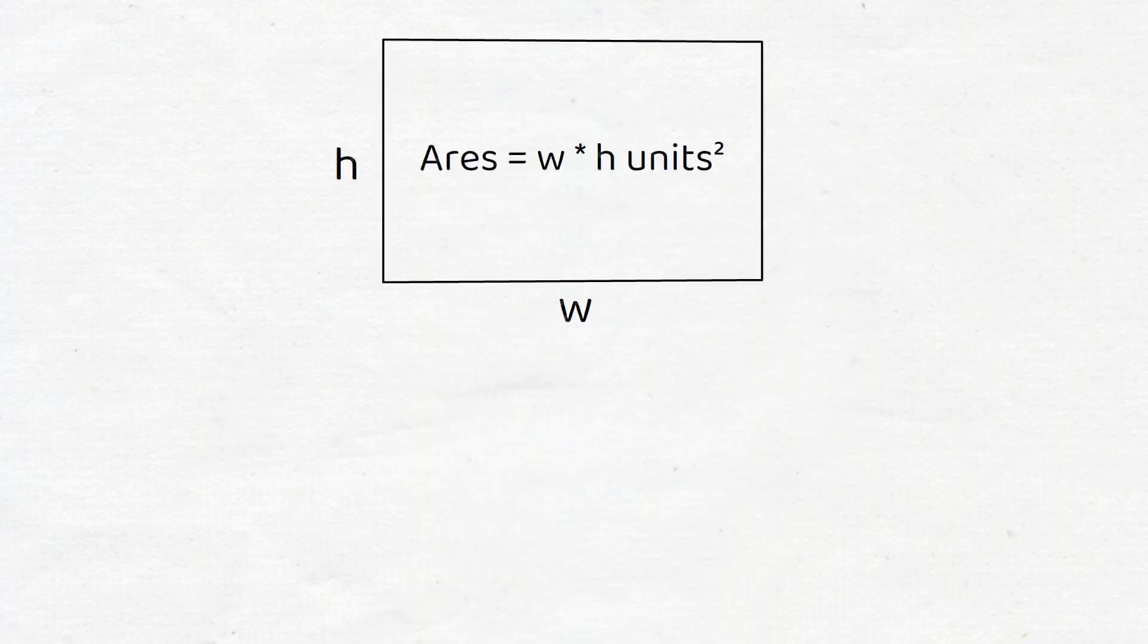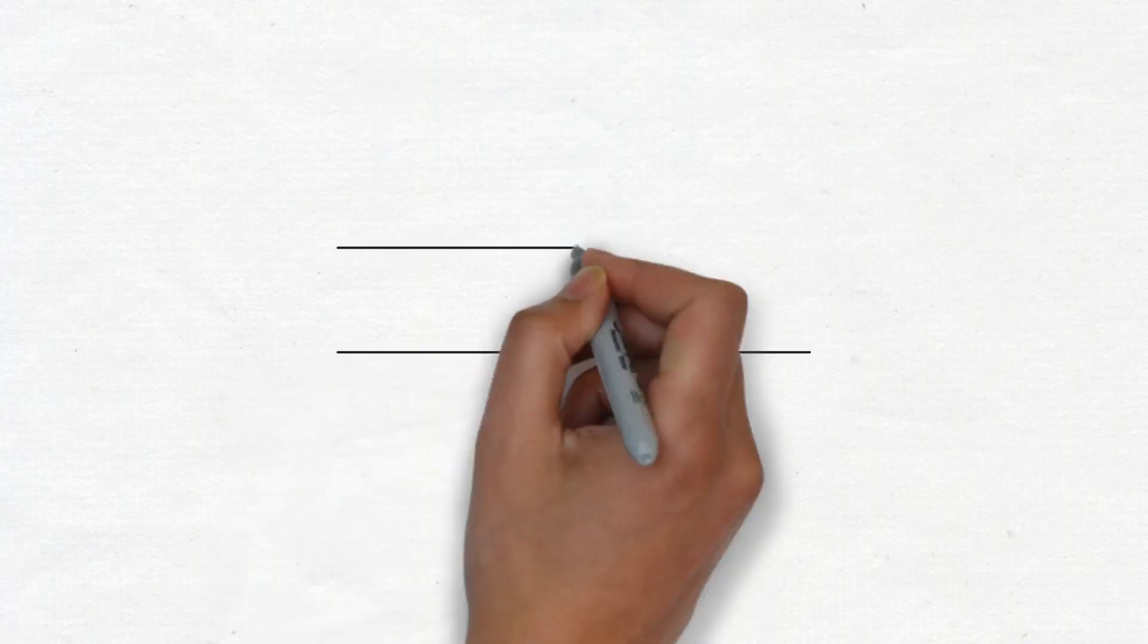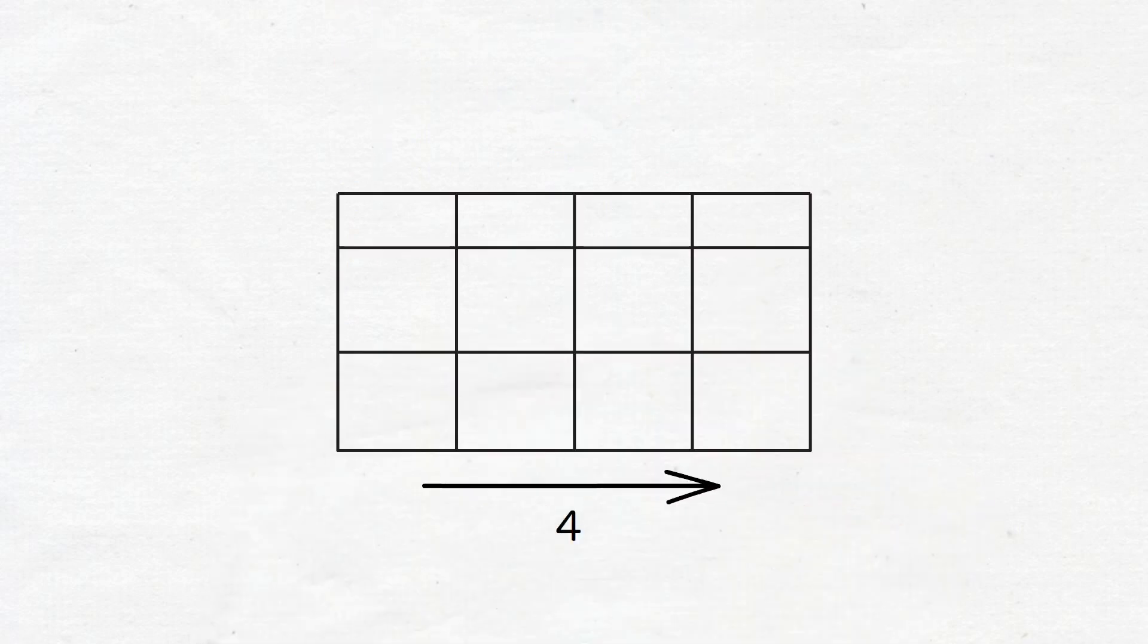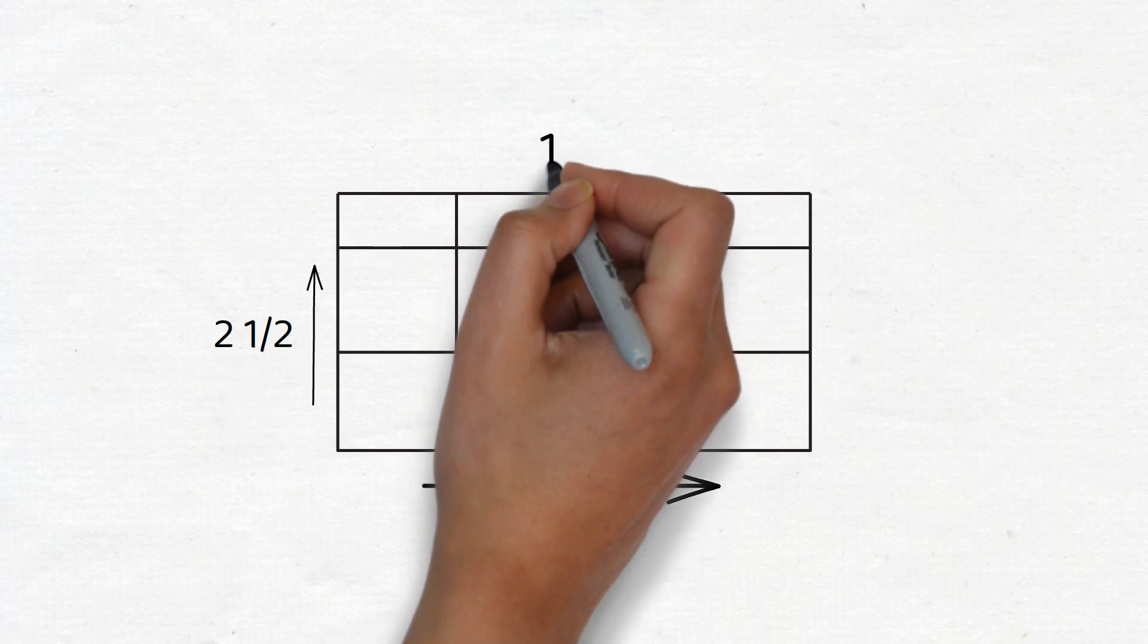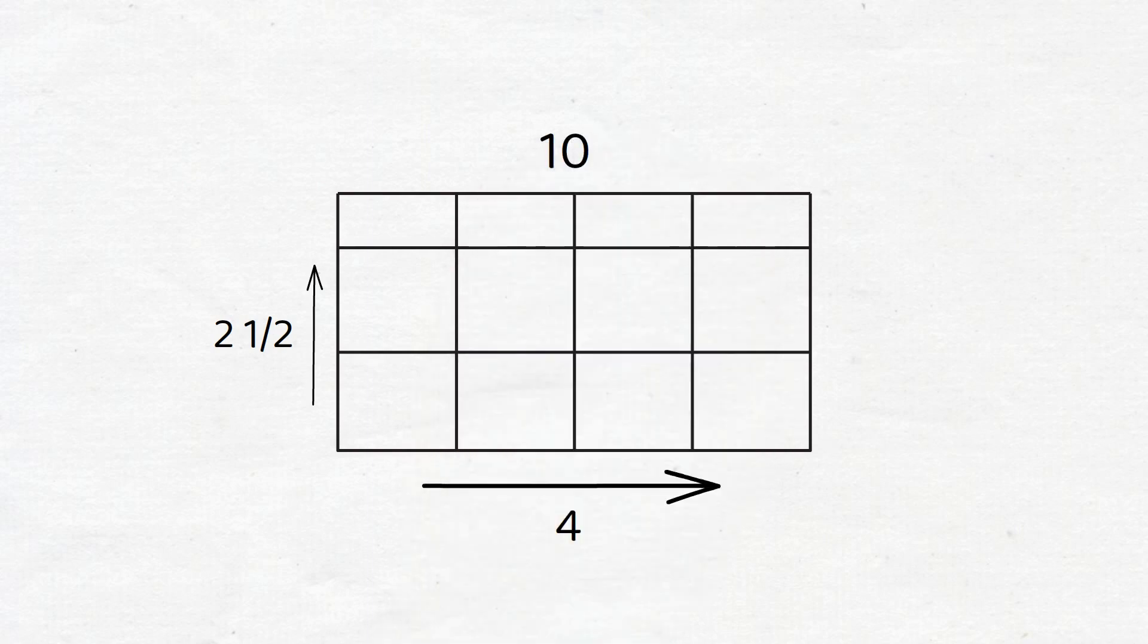For example, consider this rectangle. There are four units across with two and a half squares tall. From the picture, the total number of units is 10 because four half rectangles together add up to two units squares.